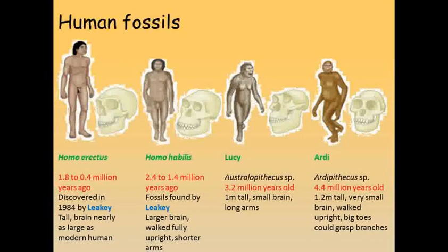Evolution is the change in a species over time. Because this change is usually too slow to see over a human lifetime, scientists use fossils to look back over much longer periods of time. We can use fossils to study the ancestors of modern humans. Modern humans all belong to a single species called Homo sapien. One ancestor of this species, closely related enough to belong to the same genus as us, are the now extinct Homo erectus and Homo habilis.